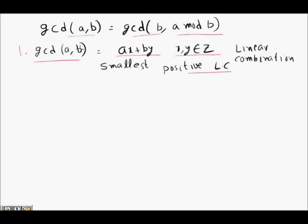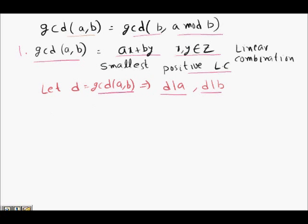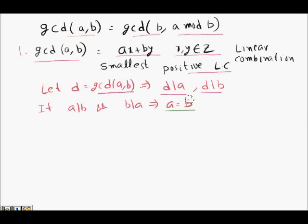So GCD(A, B) can be represented as the smallest positive linear combination, where X and Y are integers. Also, if D is the GCD of A and B, it divides both A and B by definition. A crucial tool for this proof: if A divides B and B divides A, then A equals B.